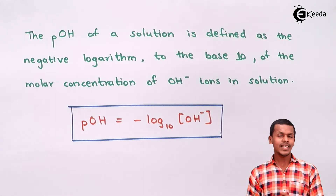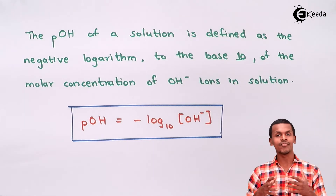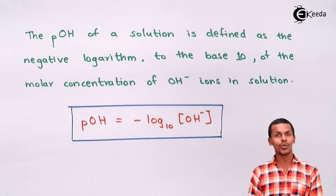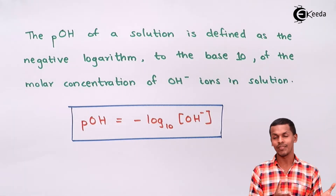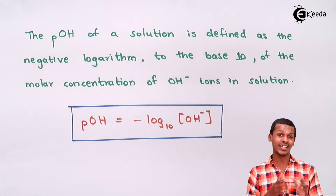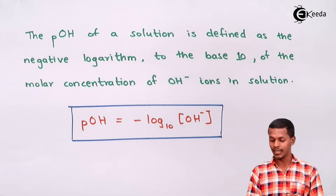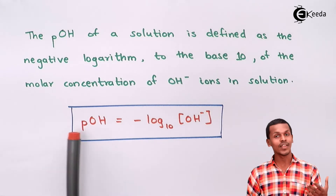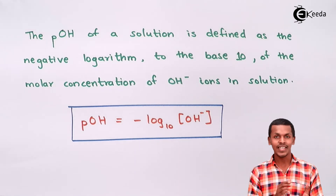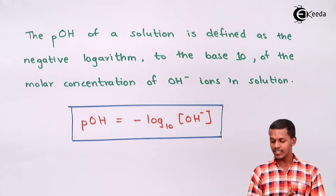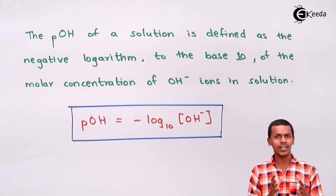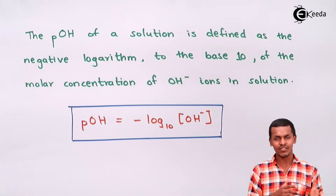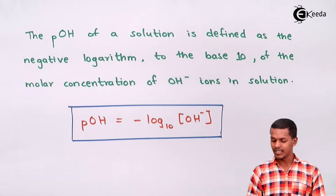This indicates that if a particular solution consists of more OH⁻ ions compared to H+ ions, that solution would be called basic. And for that reason, more OH⁻ ions means the pOH value will be very much less. So now we are considering both acid and base.